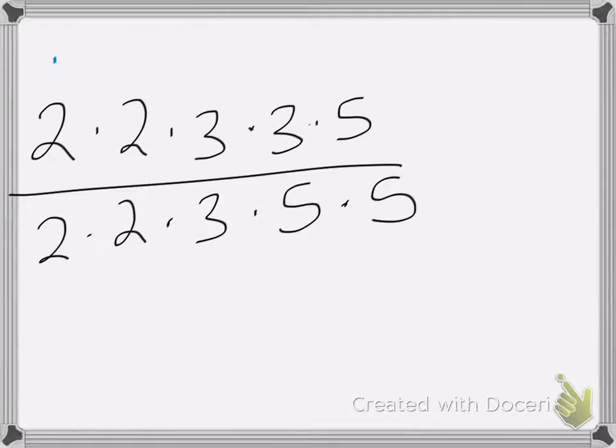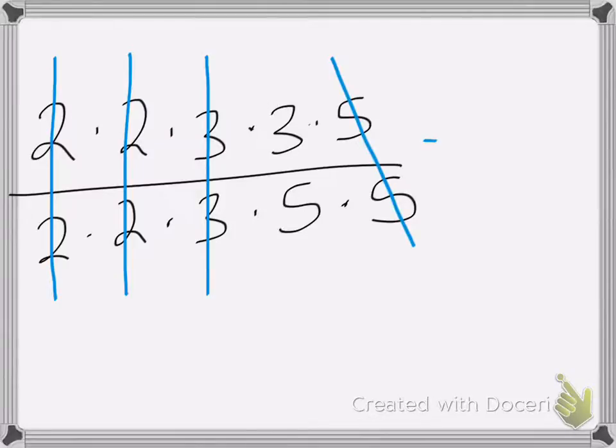So we can say 2 divided by 2 is equal to one, 2 divided by 2 is equal to one, 3 and 3, and 5 and 5. So in this case, my answer is just 3 fifths.